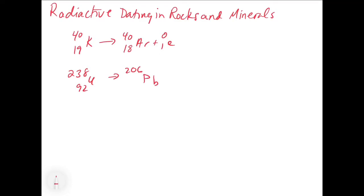One important thing to understand with radioactive dating in rocks and minerals is when uranium decomposes from uranium-238 to lead-206, there is going to be a mixture. Initially, at time zero, we have 100% uranium-238. As time goes on, we're going to get a mixture of two things. At any time other than zero, we're going to get some uranium-238 plus some lead-206. In terms of numbers of atoms at any given time, all of the atoms of uranium-238 and lead-206 are going to add up to the original number of atoms of uranium-238.